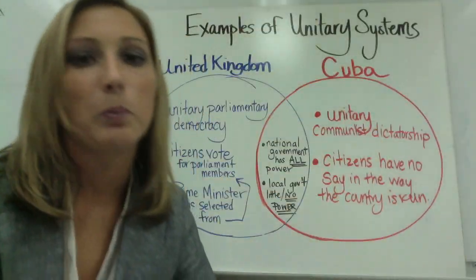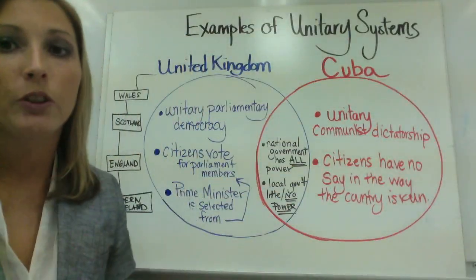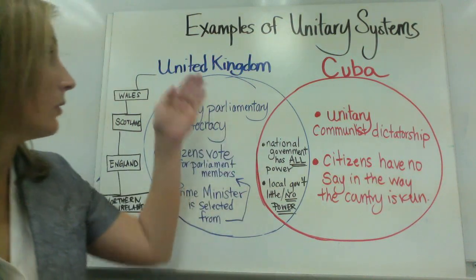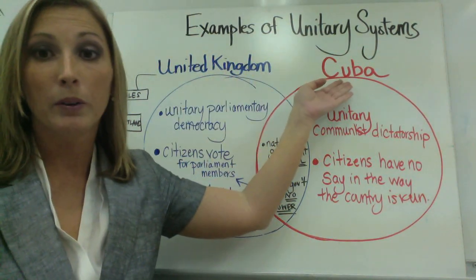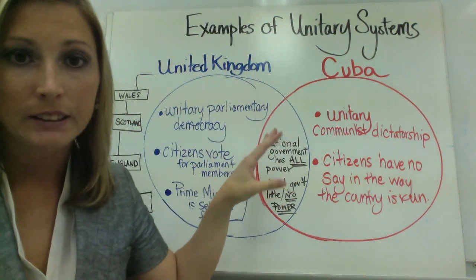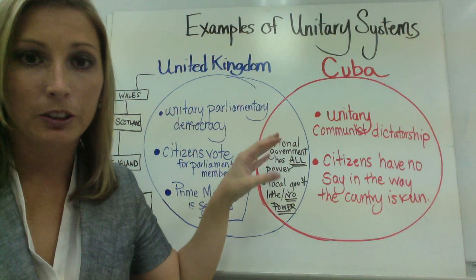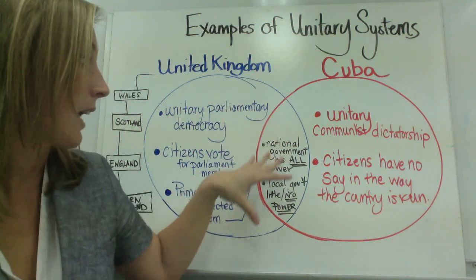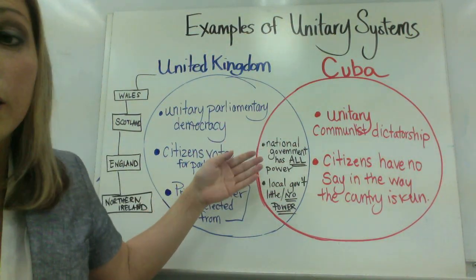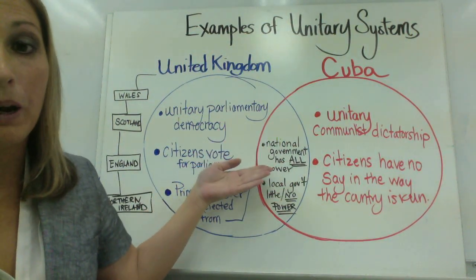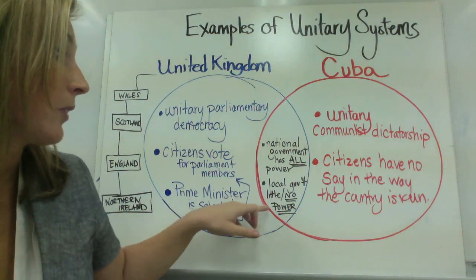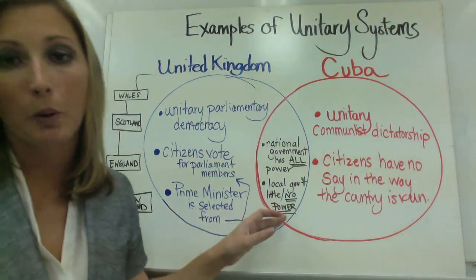Two examples of unitary systems are the United Kingdom and Cuba. The main thing these two systems have in common is that their national government has all the power, and their local government has little to no power.